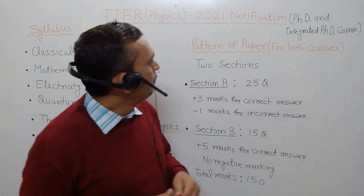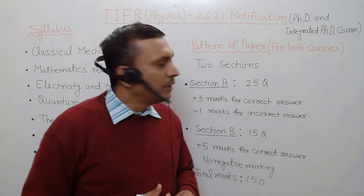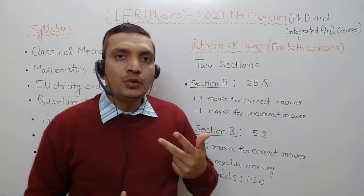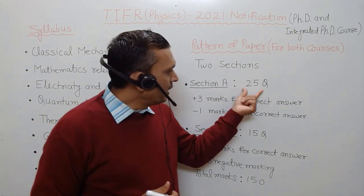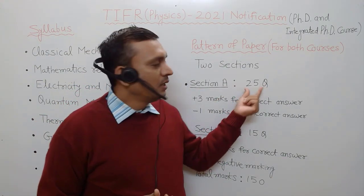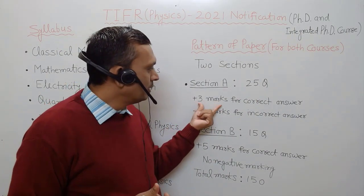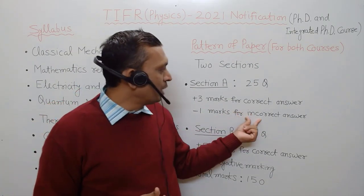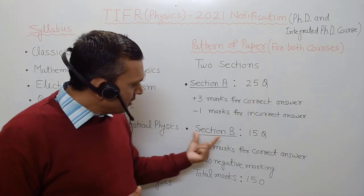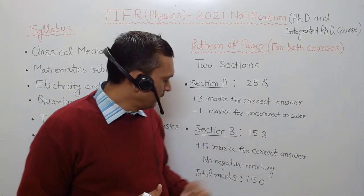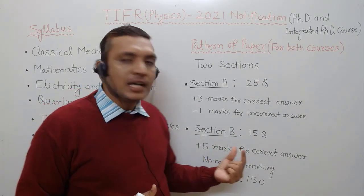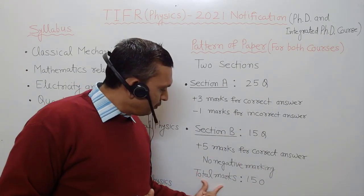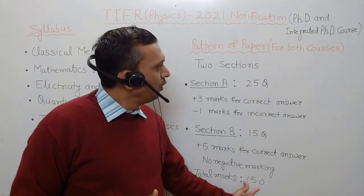Now we will see the pattern of the paper for both PhD as well as integrated PhD course. In both courses, there will be two sections. Section A contains 25 questions — for a correct answer you will get plus 3 marks, and for an incorrect answer you will get minus 1 mark, so there will be negative marking for Section A. In Section B, there will be 15 questions — you will get plus 5 marks for a correct answer and there will be no negative marking. This paper will be of 150 marks total.